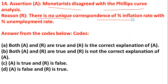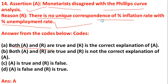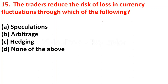The next question is an assertion and reasoning question: assertion — monetarists disagreed with Phillips curve analysis; reason — there is no unique correspondence of percentage change in inflation rate with percentage of unemployment rate. The right answer is option A: both assertion and reason are true and the reason is the correct explanation of the assertion.